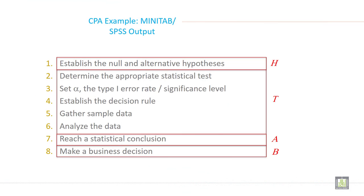These are the steps for hypothesis testing. Establish the null and alternative hypothesis. Determine the appropriate statistical test. Set alpha significance level, the type 1 error rate, or you can say significance level.